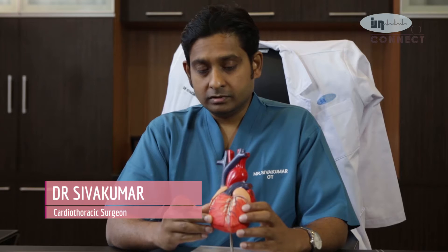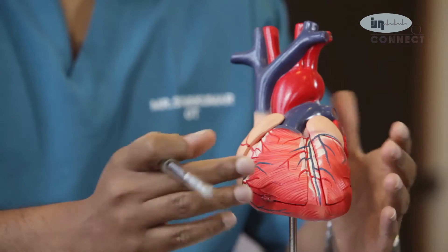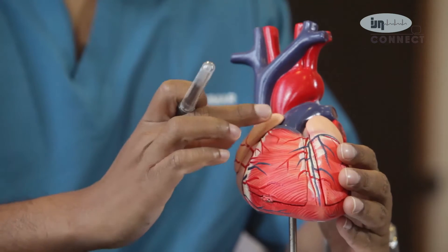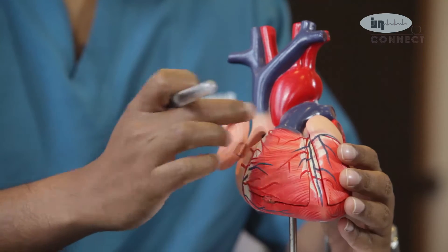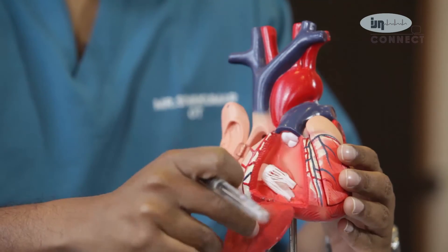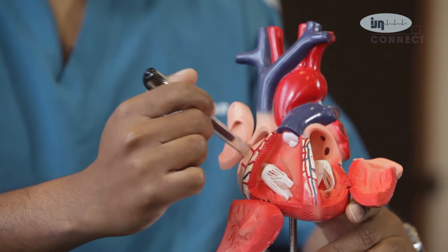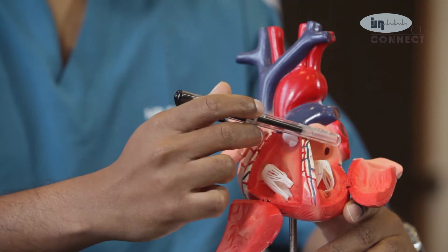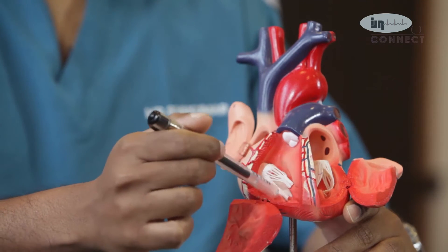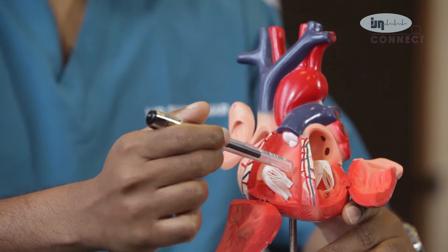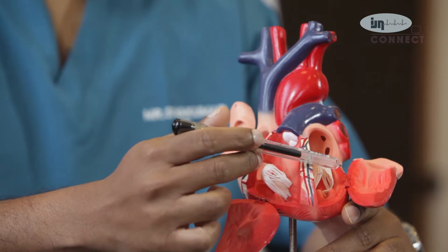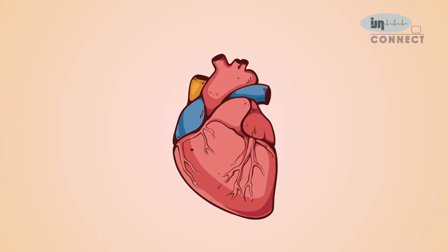If you look at the heart, it looks like a cone-shaped organ, but it's not just one whole structure. Inside the heart, if you look, you have four components — four chambers. In the upper portion of the heart, you have two chambers called the atrium, one on the right side and one on the left side. The lower chambers are called the ventricles, and you have one on the right and one on the left.